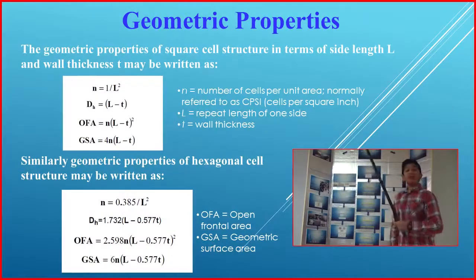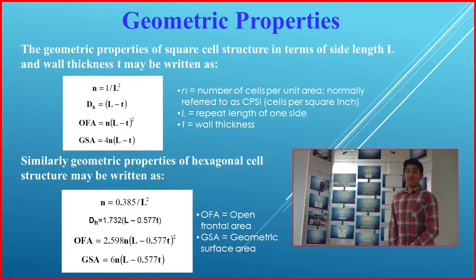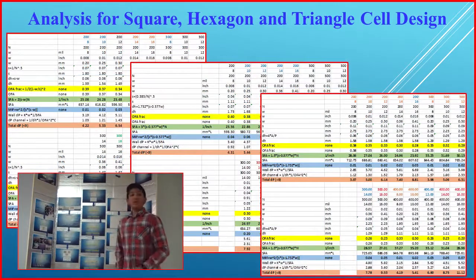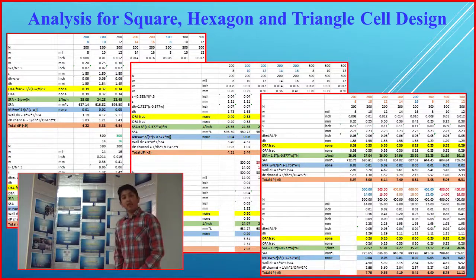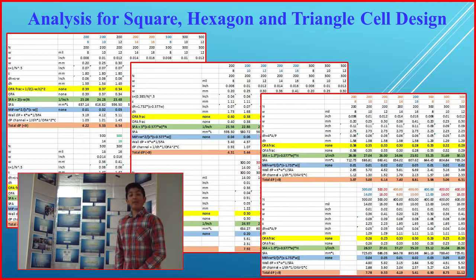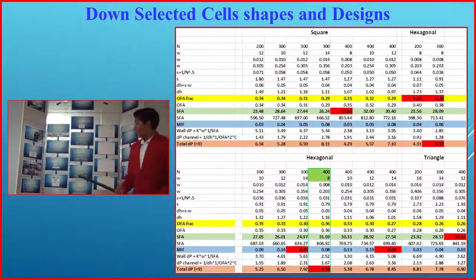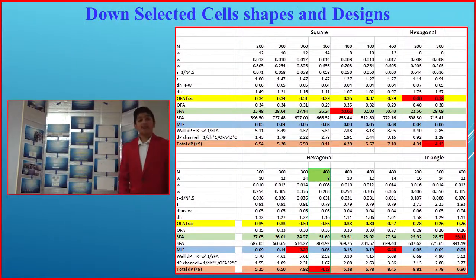Using geometry, Excel spreadsheets, and my research, I calculated key parameters such as open frontal area, surface filtration area, back pressure, mechanical integrity, and hydraulic diameter for each design.